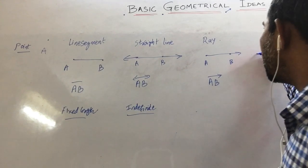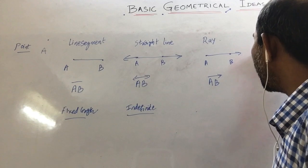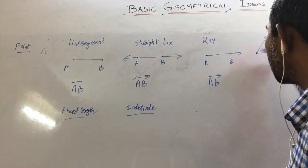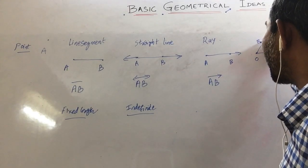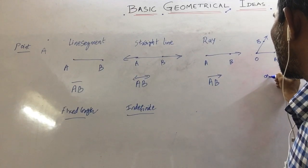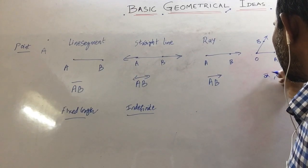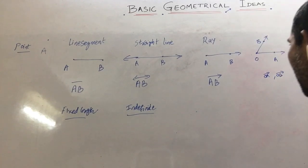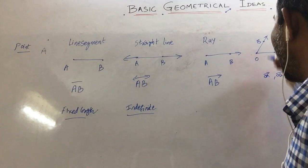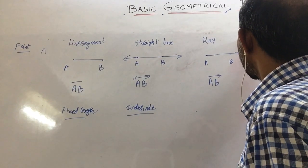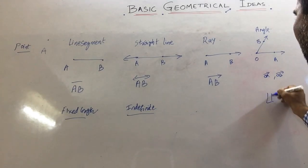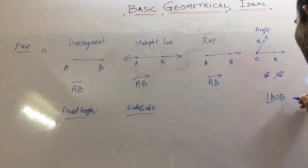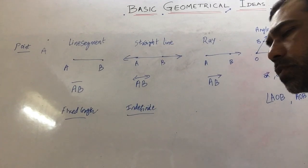If you join two rays to a single common point, suppose this is the common point O and OA is one ray and OB is another ray, then when you join these two there will be an angle forming at O. That angle is represented by angle AOB, this is the notation of angle.